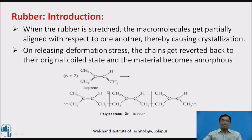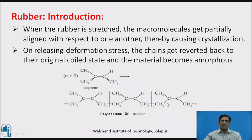Rubber is basically a polymer of an isoprene unit. When isoprene undergoes the polymerization process, it gives us polyisoprene, which is nothing but rubber.